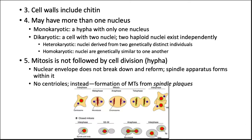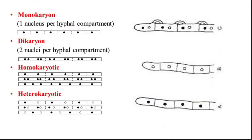Due to the elongated nature of the cells — since hyphae are not separated from each other — the cell itself is not a relevant unit of reproduction; the nucleus is. This diagram shows monokaryotic (one nucleus), dikaryotic (two nuclei), and underneath that, if the nuclei are genetically the same, homokaryotic; if they are different (denoted by black and white dots), then heterokaryotic.